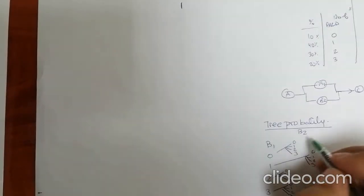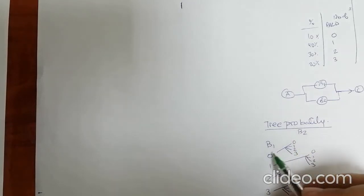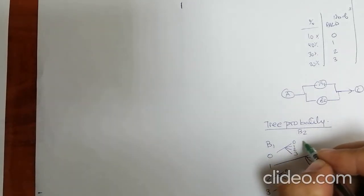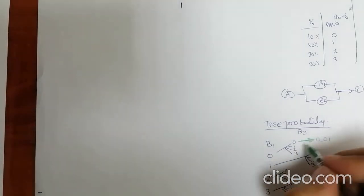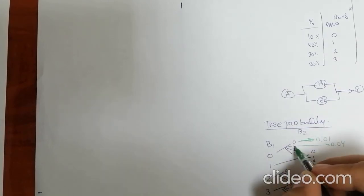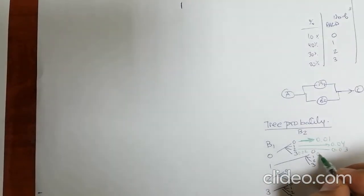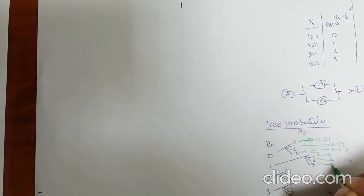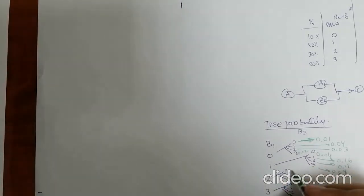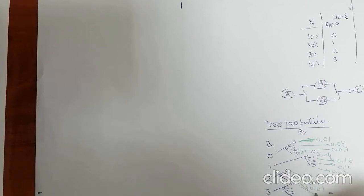The probability of B1 breaking down zero times is 0.1, and B2 breaking down zero times is 0.1, so that joint value is 0.1 times 0.1 equals 0.01. We then compute all the joint probabilities across the table: 0.04, 0.16, 0.02, 0.08, 0.06, and 0.04 for the respective combinations.